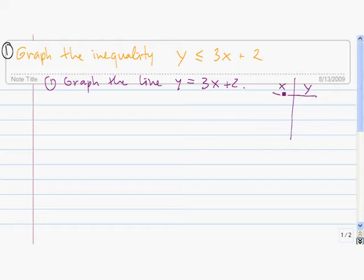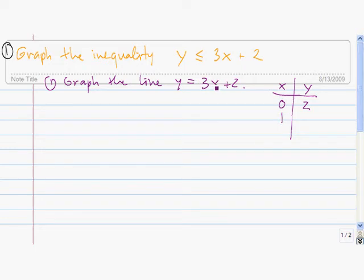When x is 0, y is equal to 3 times 0, which is 0, plus 2, which is 2. When x is 1, y is equal to 3 times 1, which is 3, plus 2, which gives us 5.